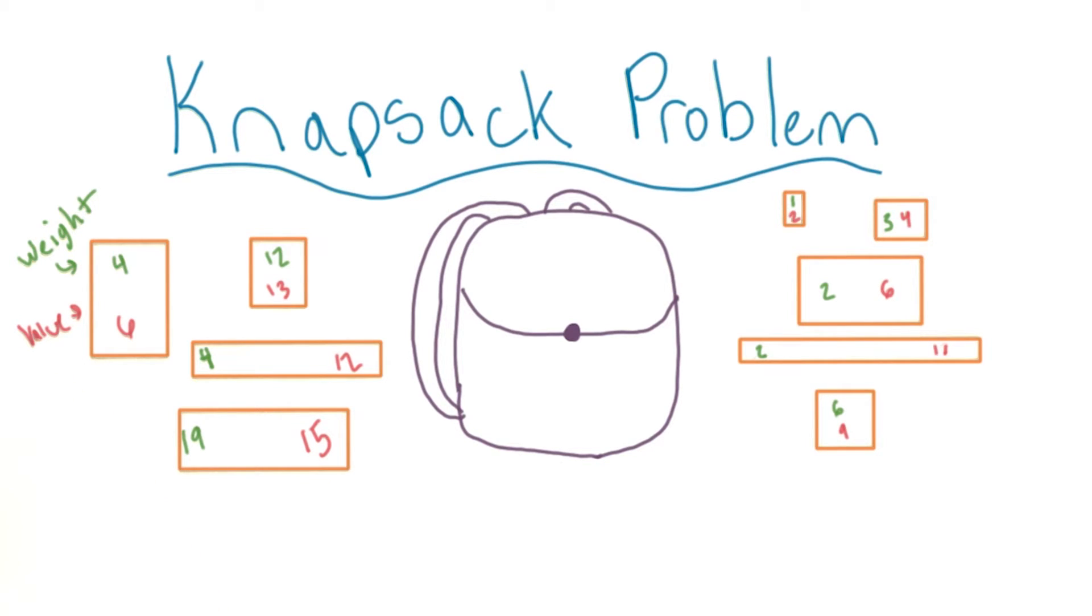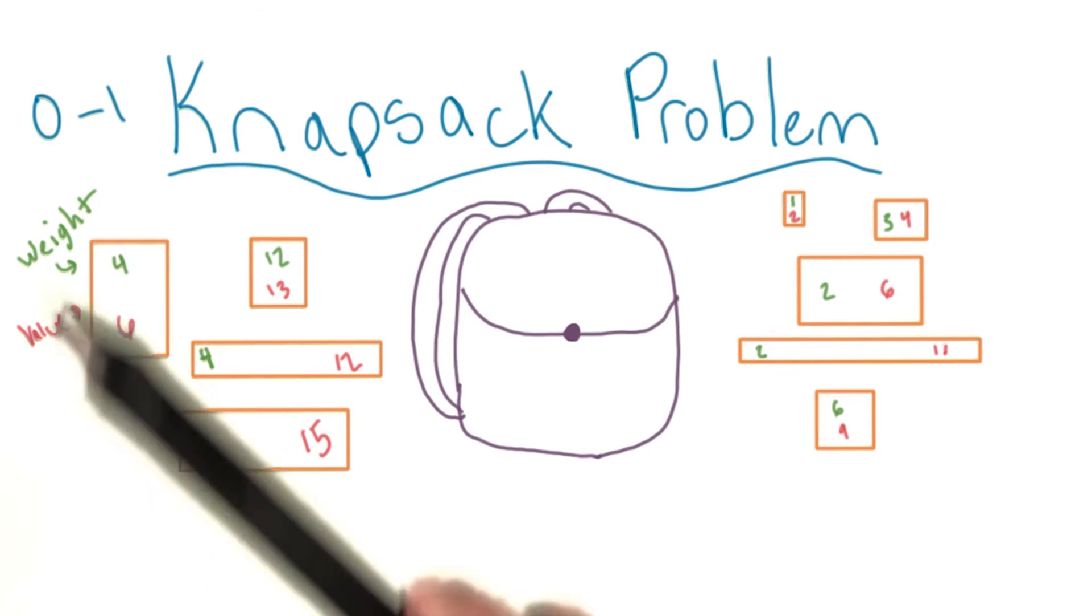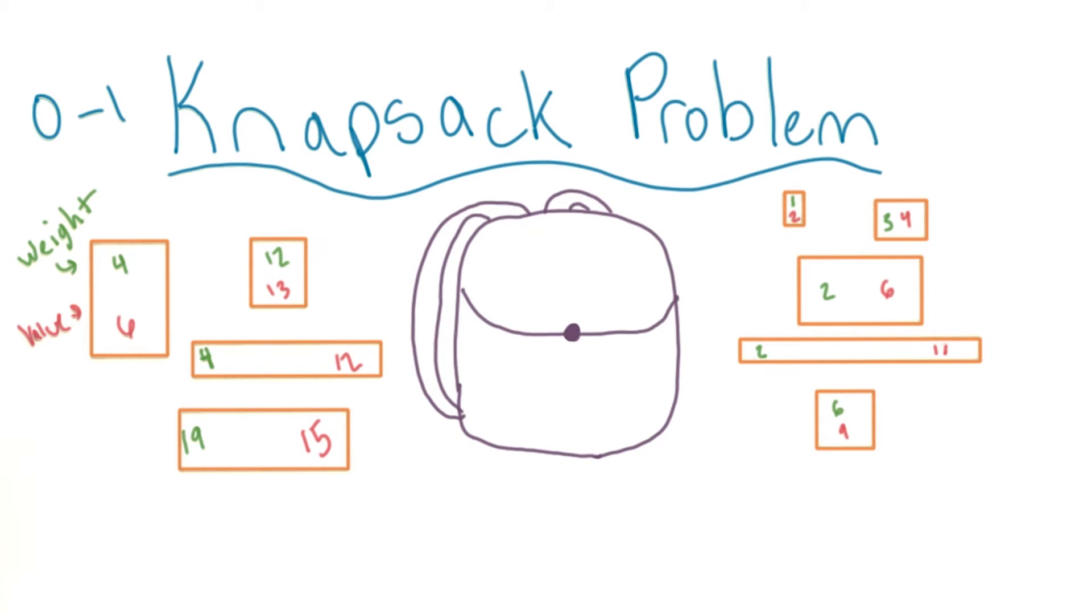The question here is how can I optimize the total value of items in my knapsack given the weight constraint? We'll focus on the zero one knapsack problem where you only have one of each object and you must either take or leave a whole object.